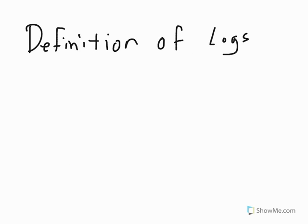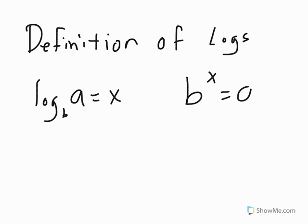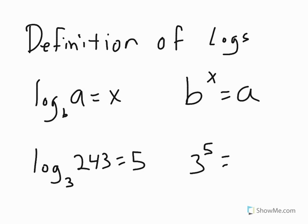Now that we're done with the exponent properties, we're going to look at the ones just for logs. The definition of a logarithm says that if you have the log base b of a equals x, then that's the same exact thing as b to the power of x equals a. With numbers, the log base 3 of 243 equals 5 is the same thing as 3 to the 5th equals 243. And that's the definition of a logarithm.